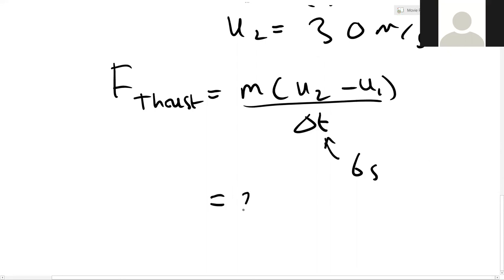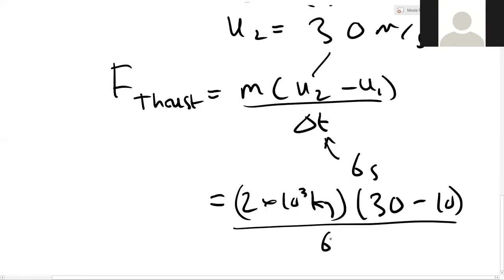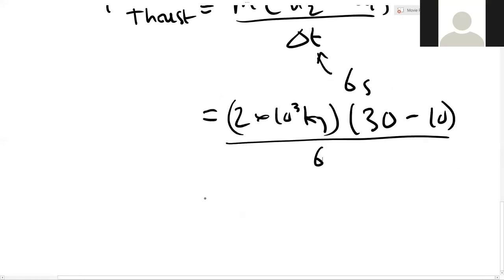So putting that in, we have 2 times by 10 to the 3 kilograms for the mass of the car times by, now there's our 30 for u2, minus 10, given in the problem as being the initial value, divided by 6, and we end up with something like 6670 newtons, which is the force, this is the thrust required by the rocket.